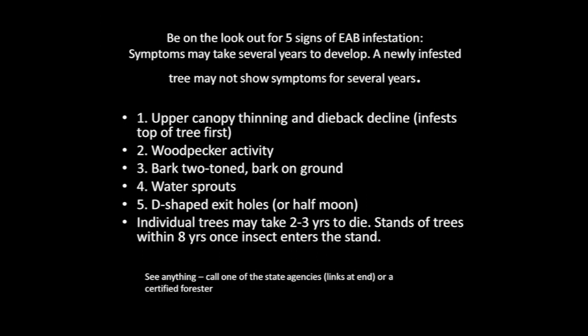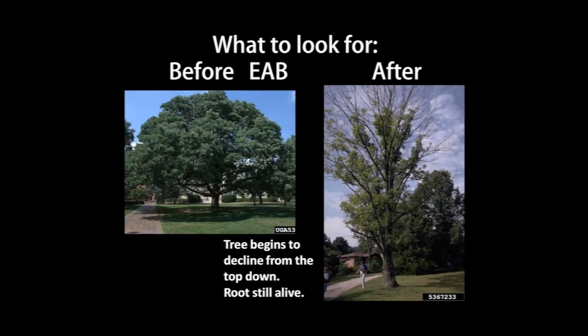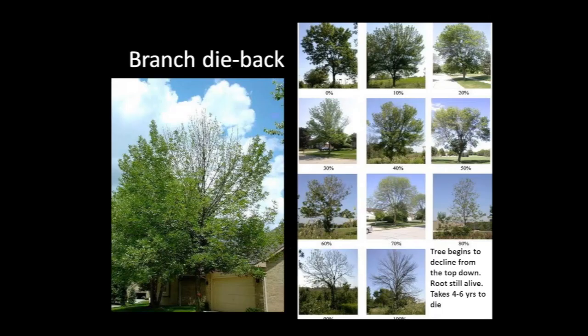Just know that the emerald ash borer is in our state. If you have ash trees on your property, they most likely will get attacked. The goal is not to stop the insect at this point, but to slow the spread. Here is a picture of a healthy canopy on the left. On the right, the canopy has been greatly diminished by the activity of the larvae feeding just underneath inside the bark. Once dieback reaches about 50%, the tree is no longer of economic value.